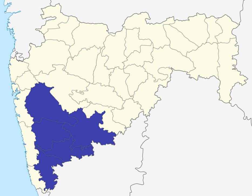Pune Division is one of the six administrative divisions of India's Maharashtra state. Pune Division is bound by Konkan division to the west, Nashik division to the north, Aurangabad division to the east, and Karnataka state to the south.